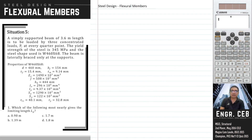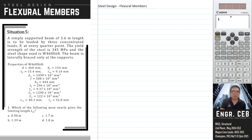Situation 5: a simply supported beam of 3.6 meter length is to be loaded by three concentrated loads P at every quarter point. The yield strength of the steel is 345 MPa and the steel shape used is W460 by 16. The beam is laterally braced only at the supports.